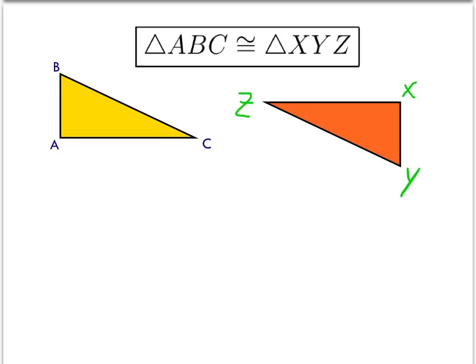So according to the CPCTC, we know a ton of different things are congruent. All of the angles are congruent. So we can go through and start labeling. I know angle A must be congruent to angle X. So we know all three pairs of these corresponding angles are congruent. Angle A is congruent to angle X, B is corresponding and congruent to angle Y, and Z and C are congruent as well.